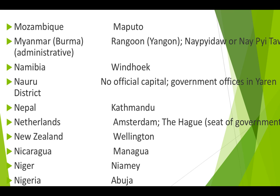Namibia — Windhoek. Nauru — Nauru is an island; there is no official capital for Nauru, but government offices are located in the Yaren district. Nepal — Kathmandu. Netherlands — Amsterdam; The Hague is the seat of the government. New Zealand — Wellington.